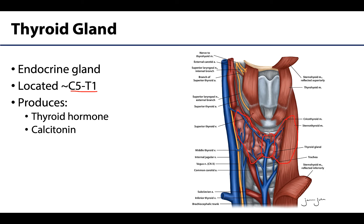So what even is an endocrine gland? It's not an exocrine gland — we will talk about some of those in more detail when discussing the salivary glands. Endocrine glands are ductless — no ducts are associated with these. And also importantly, they secrete hormones towards the blood.